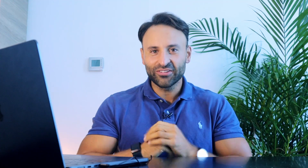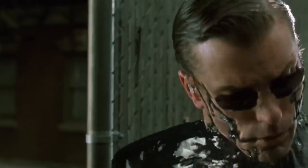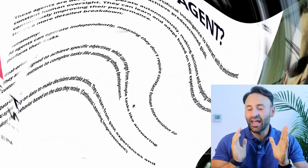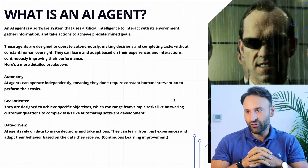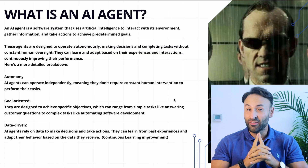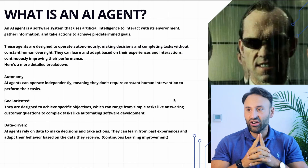So what is an AI agent? An AI agent is a software system that uses artificial intelligence to interact with its environment, gather information, and take actions to achieve predetermined goals.